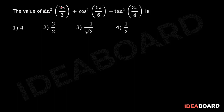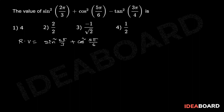The value of sin square 2π/3 plus cos square 5π/3 minus tan square 3π/4 is required. The required value equals sin square 2π/3 plus cos square 5π/6 minus tan square 3π/4.